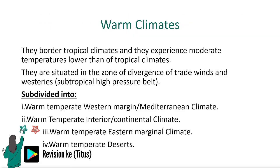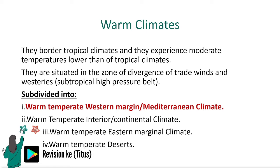The warm climates border tropical climates and experience moderate temperatures lower than those of tropical climates. They are situated in the zone of divergence of trade winds and westerlies. They are divided into four: the warm temperate western margin climate, the warm temperate continental climate, the warm temperate eastern marginal climate, and the warm temperate deserts.